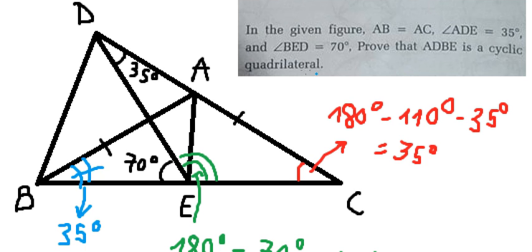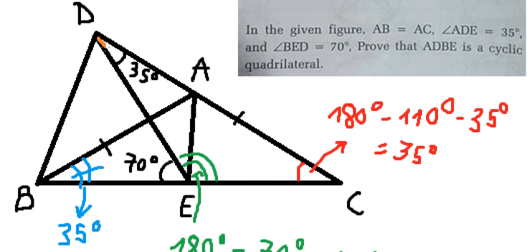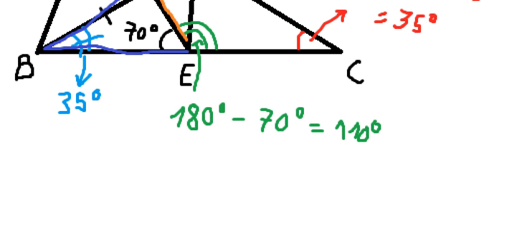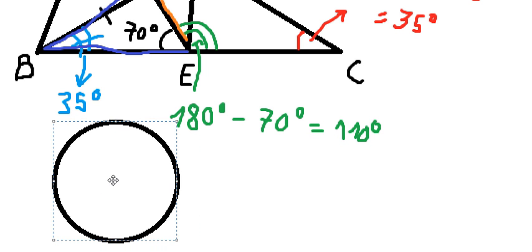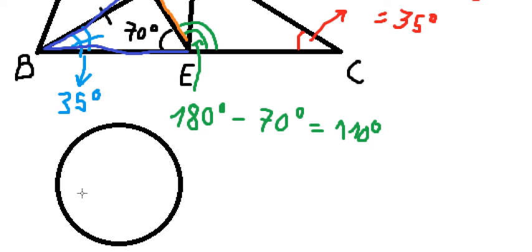Now we go back to ADBE. If we look carefully, angle ADE and angle ABE — we can see that angle ADE is 35 degrees and angle ABE is also 35 degrees.